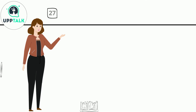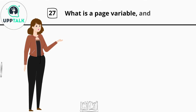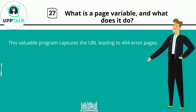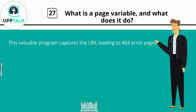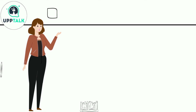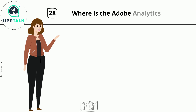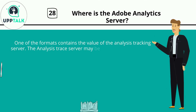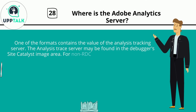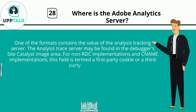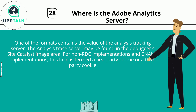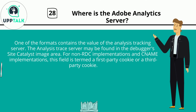Question 27: What is a page variable, and what does it do? This valuable program captures the URL leading to 404 error pages. Question 28: Where is the Adobe Analytics server? One of the formats contains the value of the analysis tracking server. The analysis trace server may be found in the debugger's Site Catalyst image area. For non-RDC implementations and CNAME implementations, this field is termed a first-party cookie or a third-party cookie.